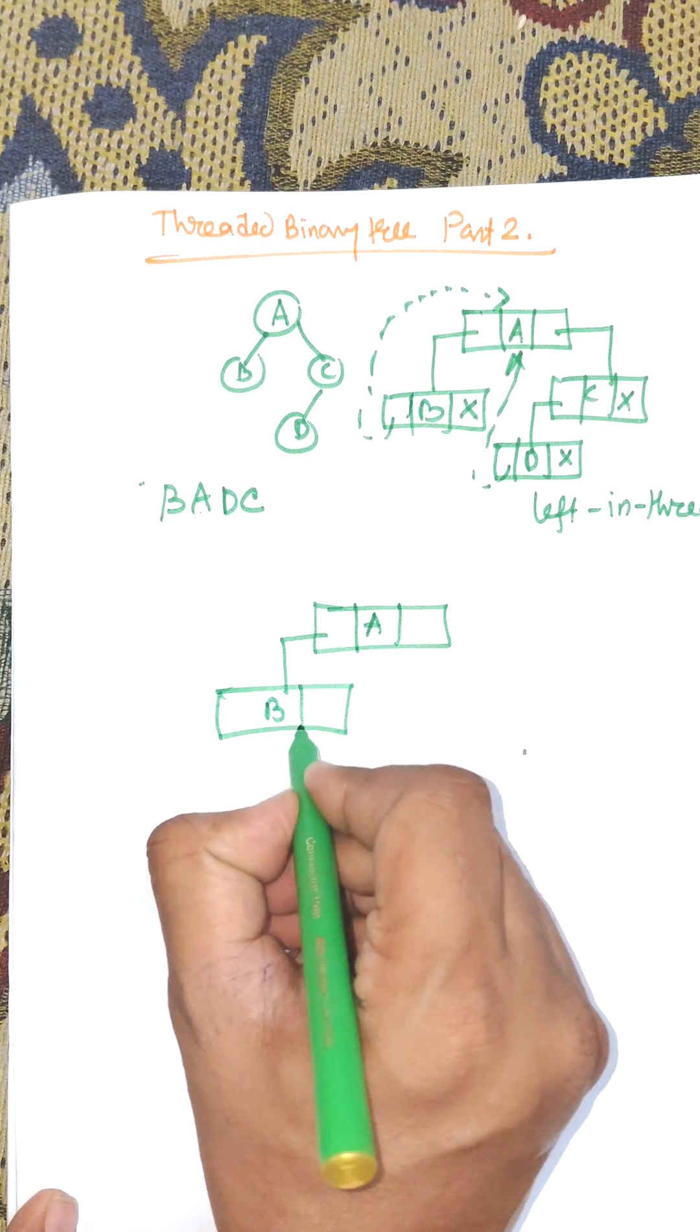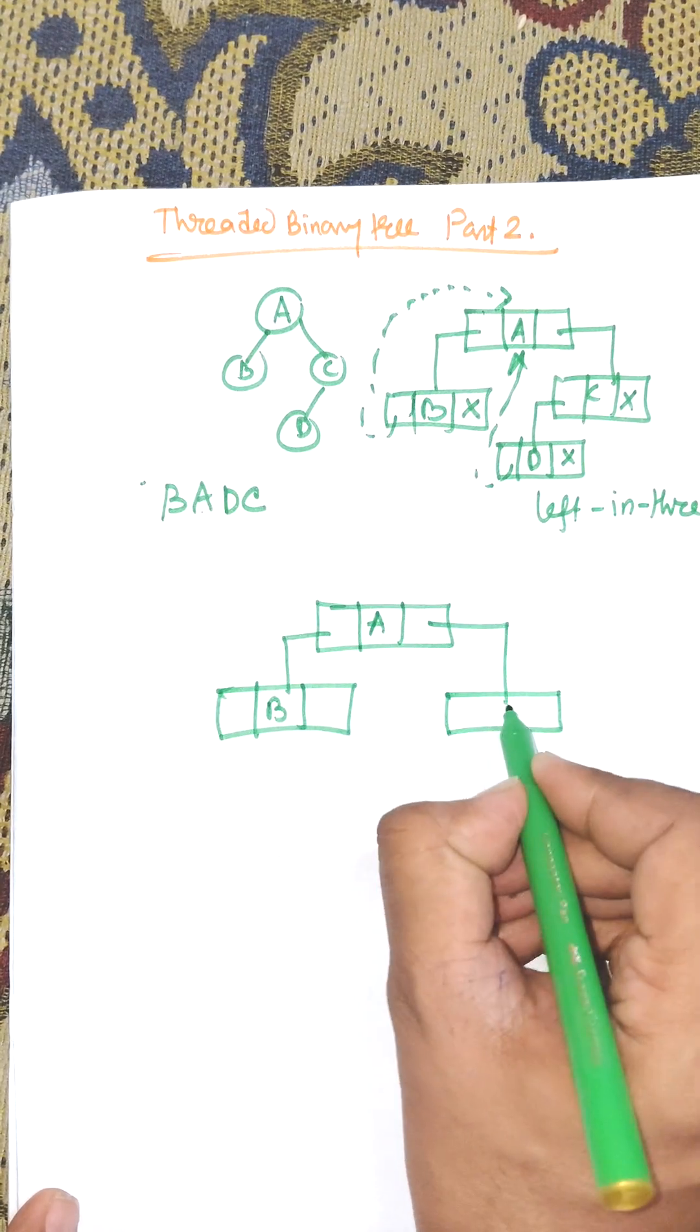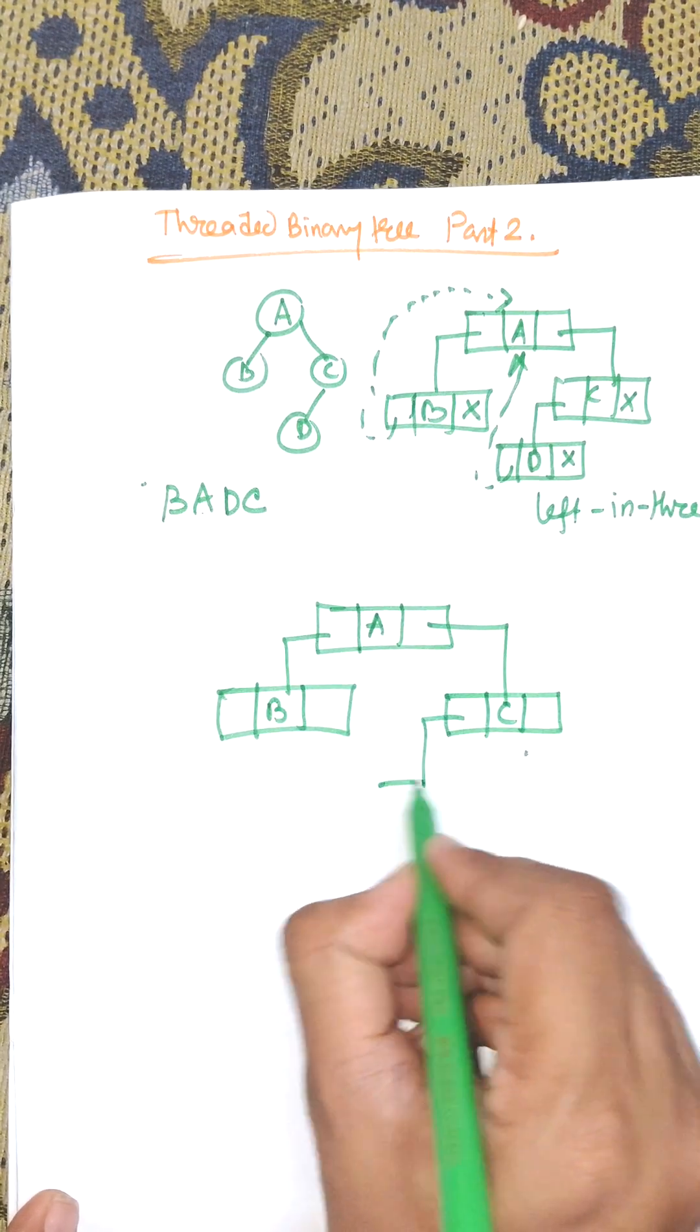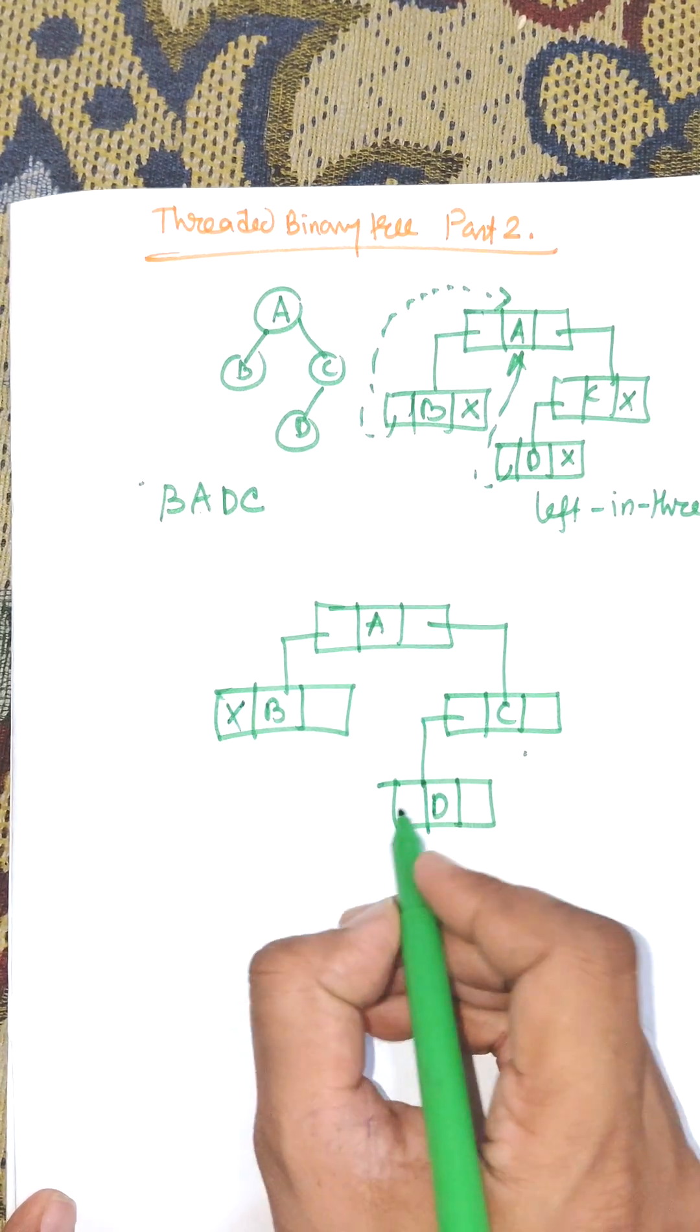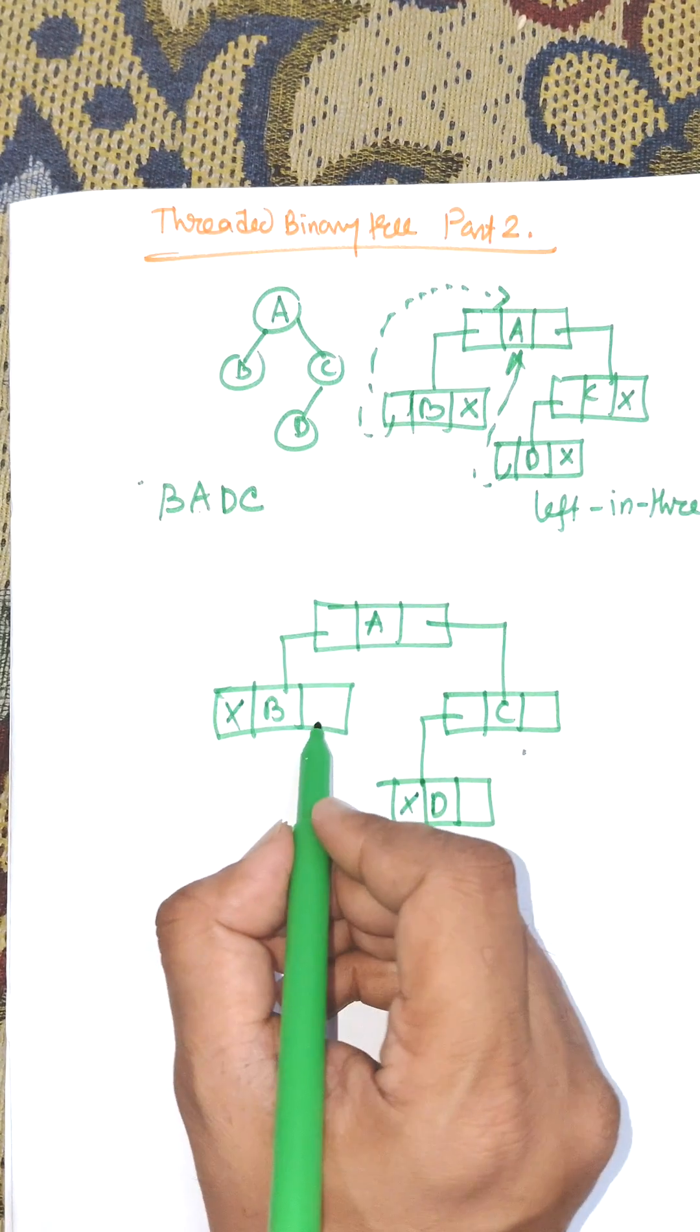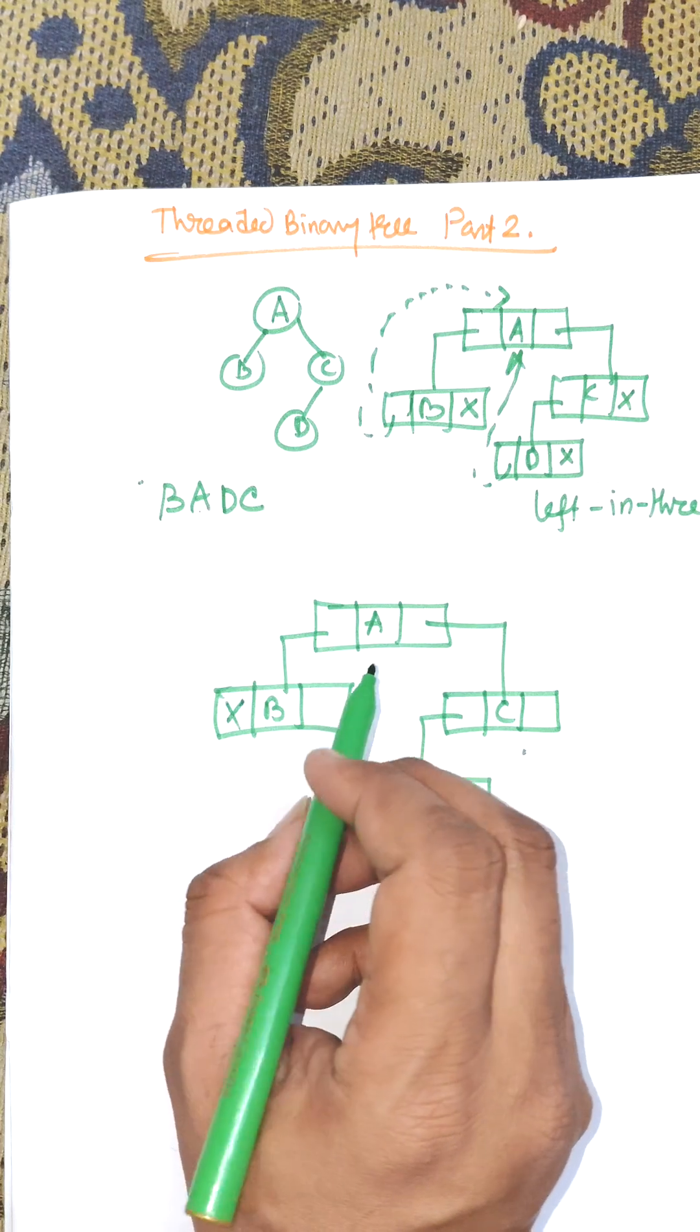For right-in threaded, we first draw the linked list representation of the tree. The right null pointers are used, while left null pointers remain the same. The right pointers are used by threads.